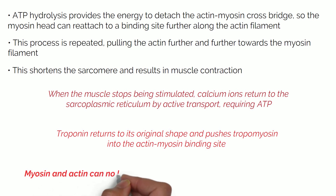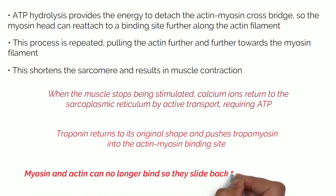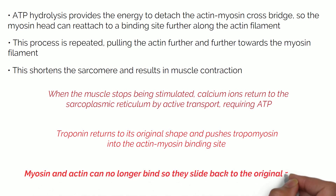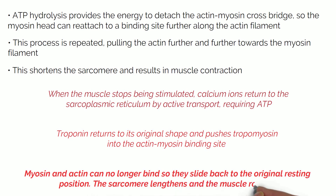When the muscle stops being stimulated, calcium ions return to the sarcoplasmic reticulum by active transport, which requires ATP. Troponin returns to its original shape and pushes tropomyosin into the actin-myosin binding site. Myosin and actin can no longer bind, so they slide back into their original resting position. The sarcomere lengthens and the muscle relaxes.